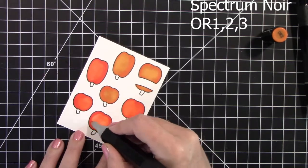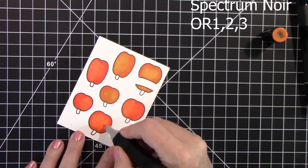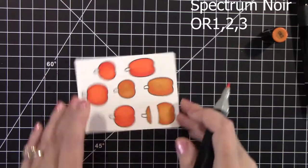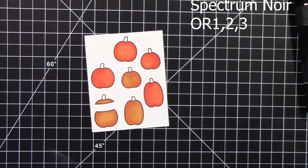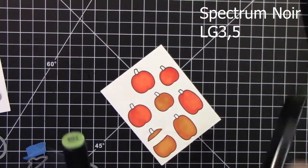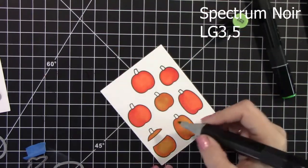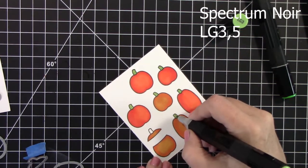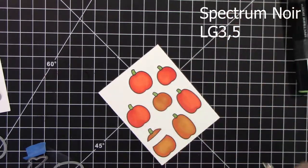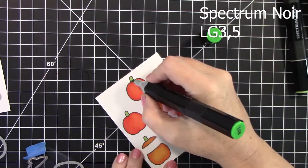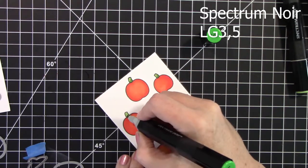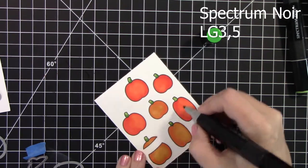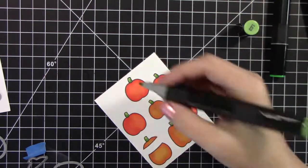So I'm just again, just shading in with the lighter. Put the darker on and then blended it out with the lighter. And I almost forgot to color the stems, but I colored those in LG 3 and 5. It's a tiny bit of highlighting. It's a small little image, so nothing crazy.